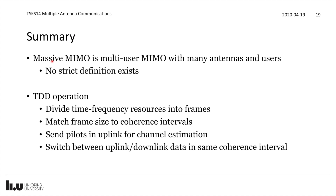In summary, massive MIMO is multi-user MIMO with many more antennas than users — typically at least 64 antennas. It operates in TDD to keep pilot overhead proportional to the number of users k rather than antennas m. The time-frequency resources are divided into coherence interval frames, with uplink pilots for channel estimation followed by uplink and downlink data transmission. This concludes lecture six in multiple antenna communications.